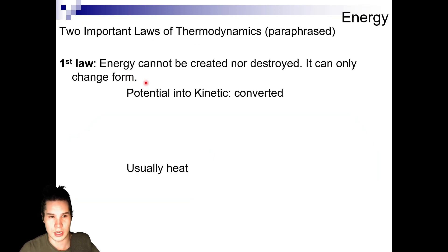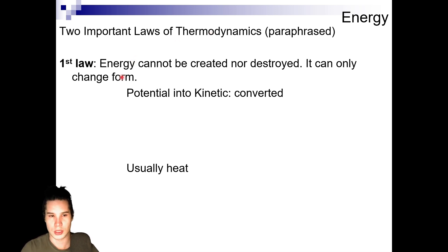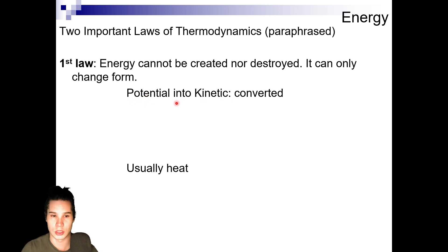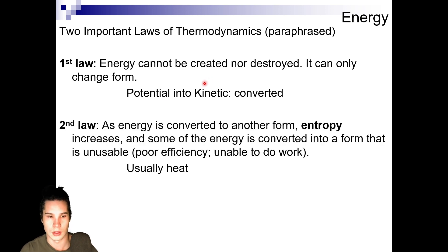Before we dive deeper, let's talk about the laws of thermodynamics — these are paraphrased. The first law is that energy can't be created or destroyed; it can only change form. So potential energy can be converted into kinetic energy — you're not creating kinetic energy or destroying potential energy, you're converting from one form to the other.